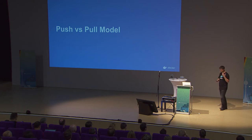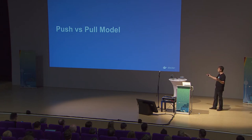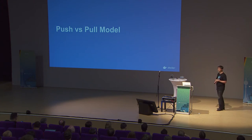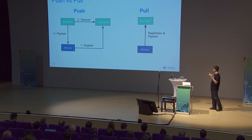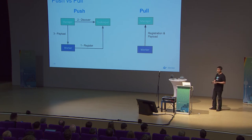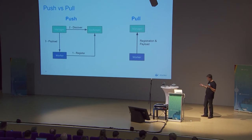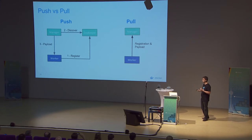There are two main models to dispatch workload: push and pull. This applies to any distributed system — there's no clear winner, they both have pros and cons. I'll summarize what they are, which model we decided to use and why, and how we offset the drawbacks.